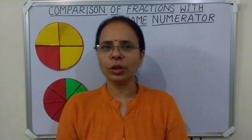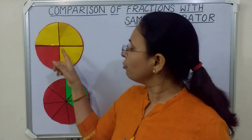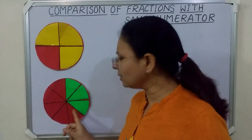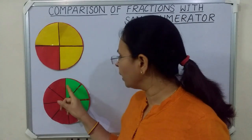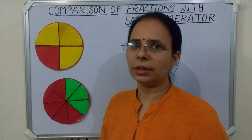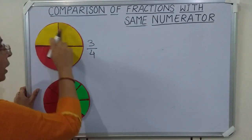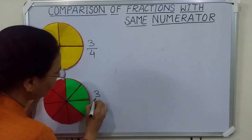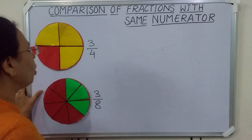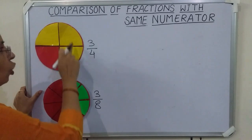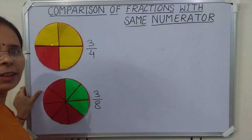Children, you can see on the board there are two circles and they are equal in size. The first circle is divided into four equal parts and the second circle is divided into eight equal parts. We have taken three parts from both the circles. Three upon four represents the colored part of the first circle, and three upon eight represents the colored part of the second circle. We can observe that the value of three parts of the first circle is greater than that of the second circle.